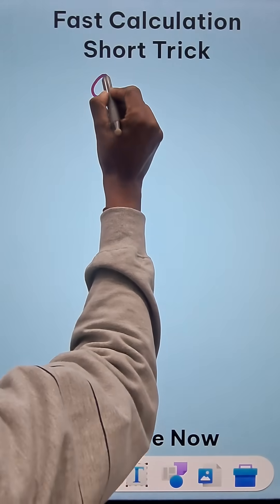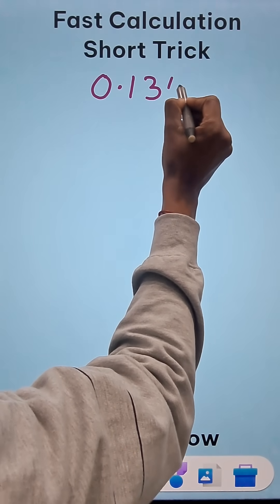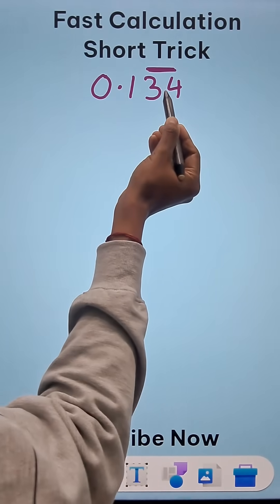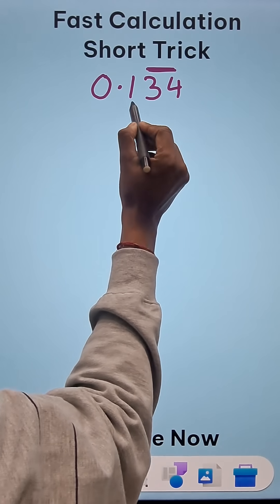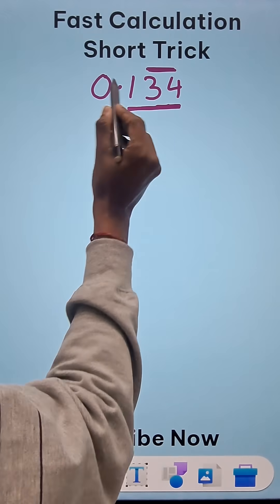How do you represent 0.134 with 3, 4 repeating in the form of P upon Q or a rational number? So here you can see that there are 3 digits after decimal.